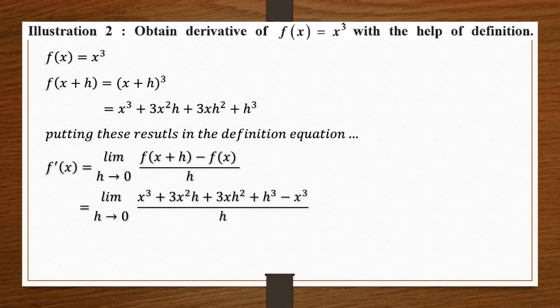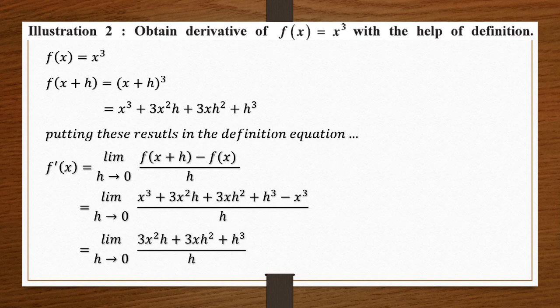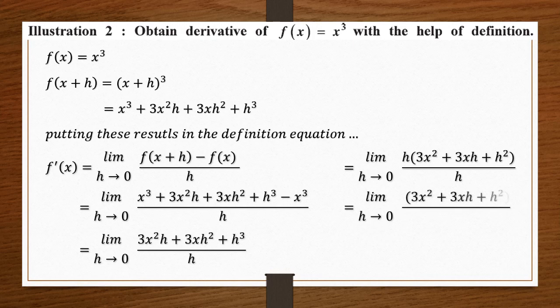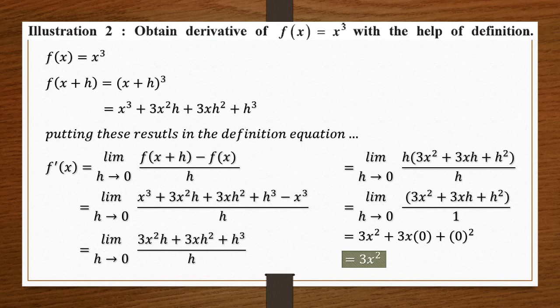Substituting, the x³ terms cancel — positive and negative x³ — leaving 3x²h + 3xh² + h³ in the numerator. Since h is common in all numerator terms, we factor it out to get h(3x² + 3xh + h²). The h in the numerator and the h in the denominator cancel. Applying the limit h tends to 0, the terms 3xh and h² become 0, leaving the answer 3x². So the derivative of x³ is 3x².